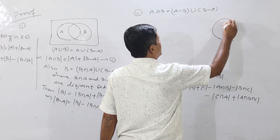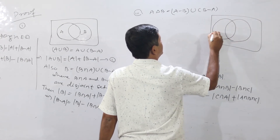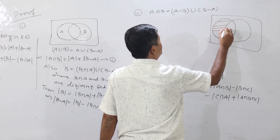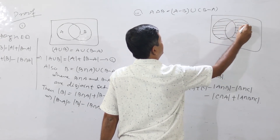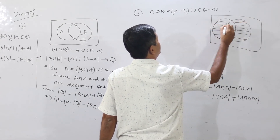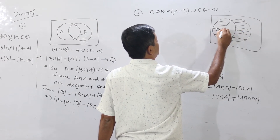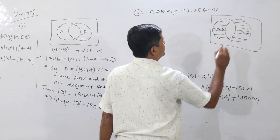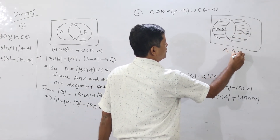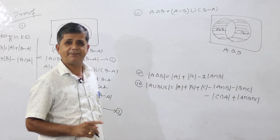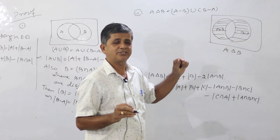A Δ B is defined as (A difference B) union (B difference A). Looking at the diagram, A difference B is one region, B difference A is another, and together they form A Δ B. These two sets are disjoint — they have no common elements.